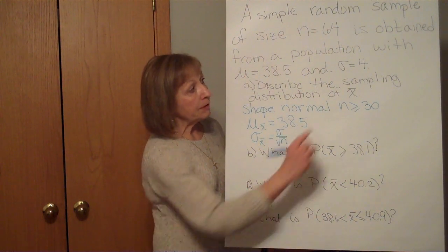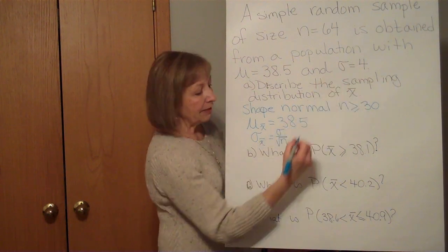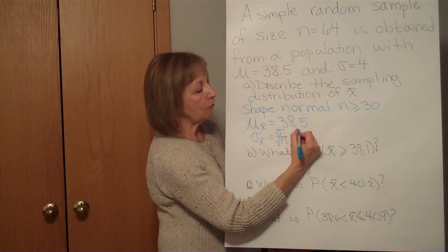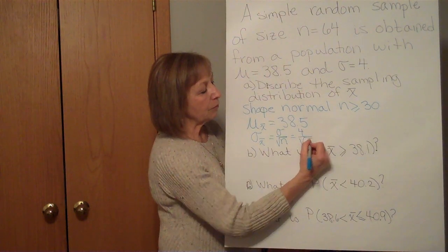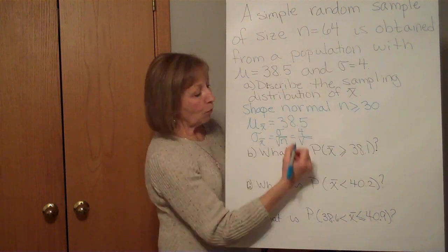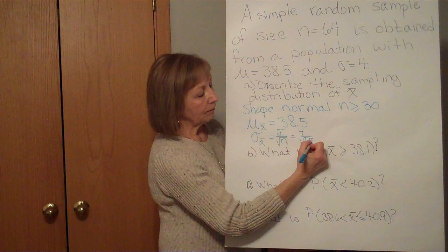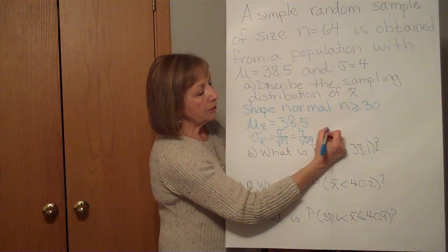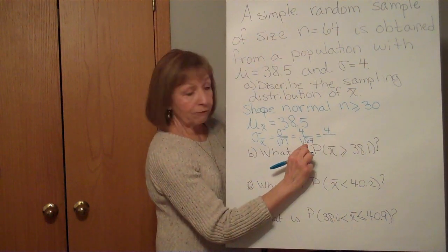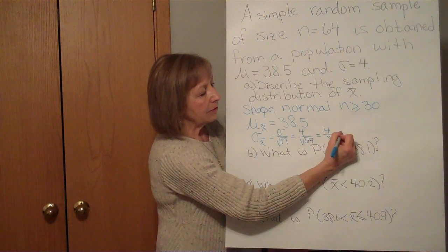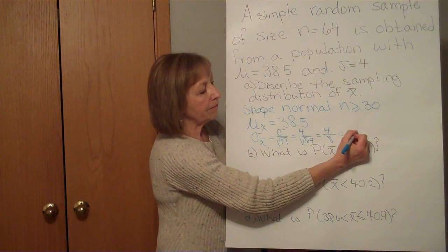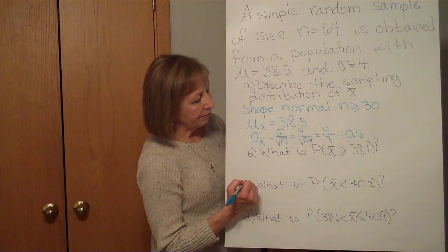So for our particular problem, our standard deviation of our individual numbers is 4 divided by the square root of 64. So that's 4 divided by 8, which simplifies to a half or 0.5.